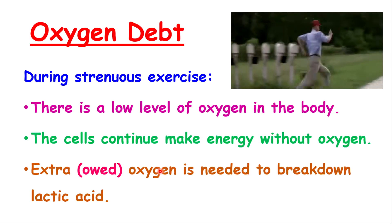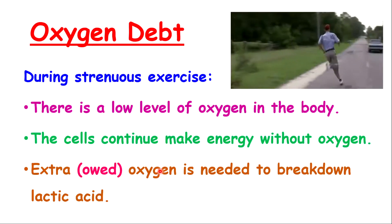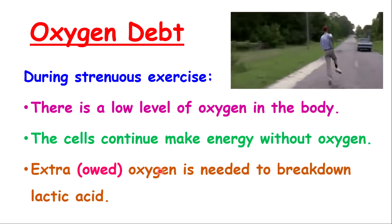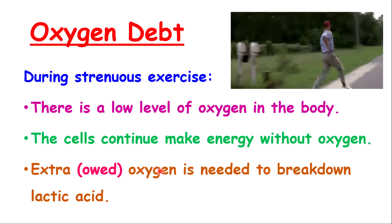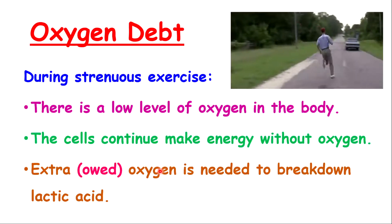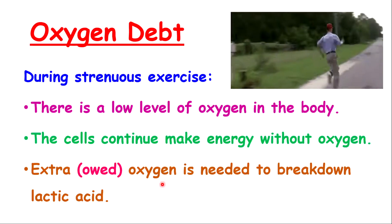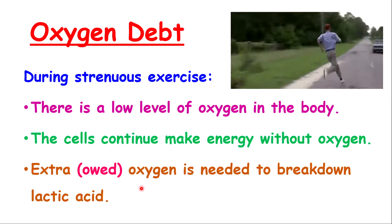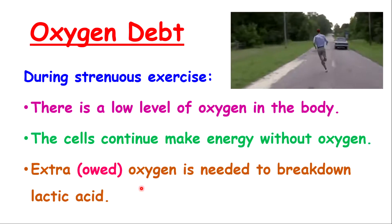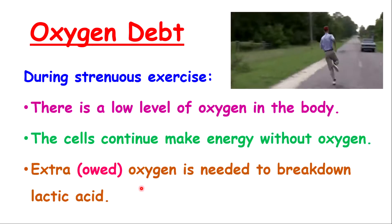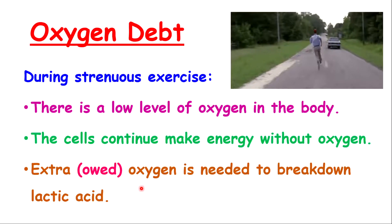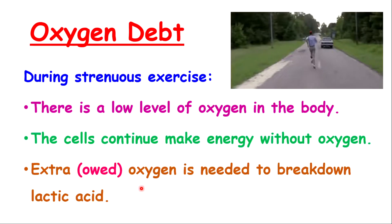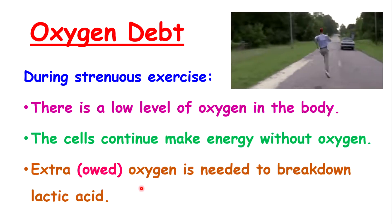There is a concept known as oxygen debt. Oxygen debt occurs during strenuous exercise when there is a low level of oxygen in the body. The cells will continue to make energy without oxygen, essentially owing the body some oxygen — and that owing of oxygen is called oxygen debt. The extra oxygen needed is used to break down lactic acid. If lactic acid is not broken down, it will result in cramping in the muscles. That is why after exercise you breathe harder and faster to repay that oxygen debt.